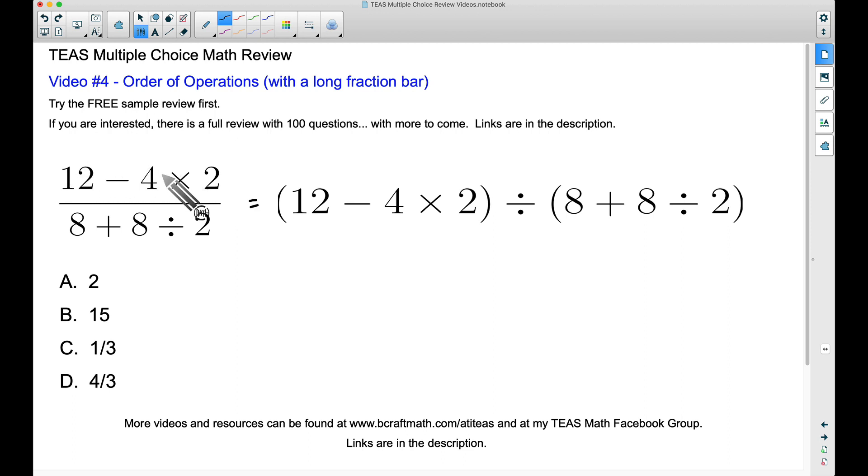So when we do evaluate this top part, which is the same thing as this right here, we still want to go ahead and multiply before subtracting. So therefore we'll have 12 minus, and this is going to be eight. Four times two is eight. So this is our first group. Let's go ahead and bring down our division that we have right here.